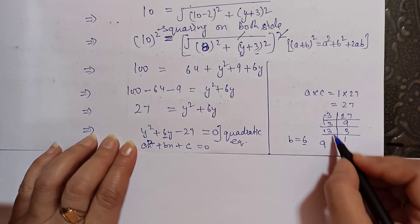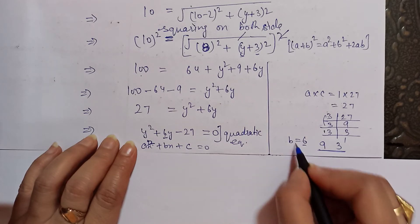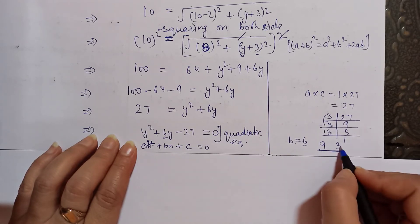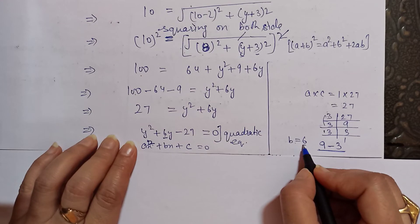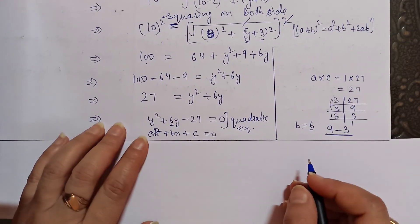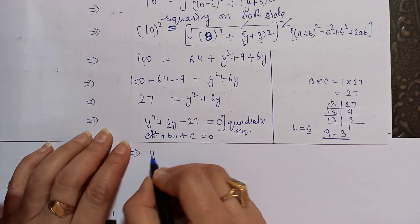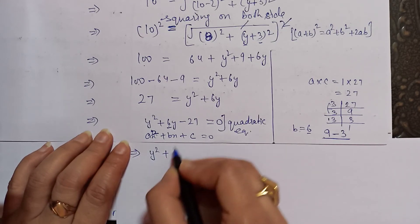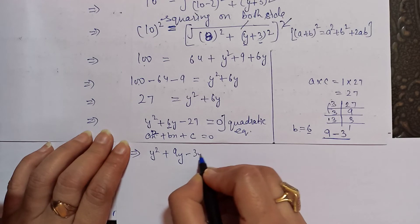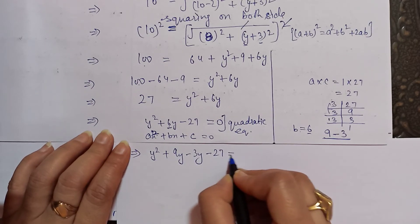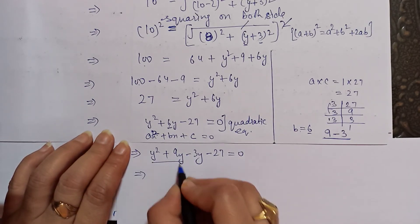3 times 9 is 27 and 3 plus... we need factors with difference/sum giving 6. So we take the factors. Here we have y². We can write y² + 9y - 3y - 27, with y as common.